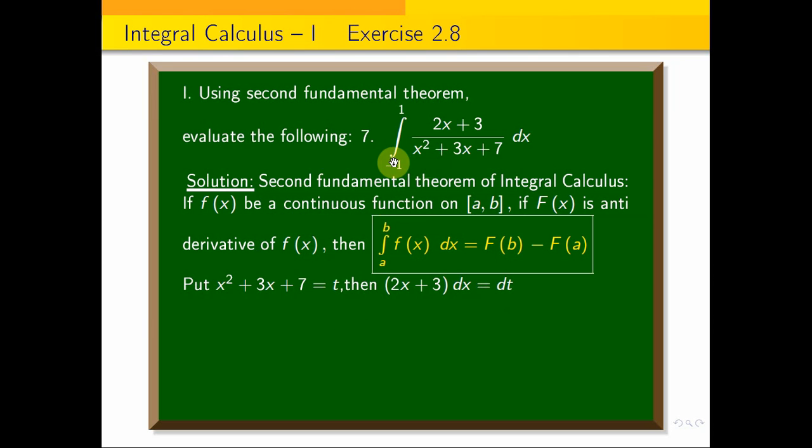So (2x + 3)dx = dt. When x equals the lower limit -1, substitute x = -1 into the equation: t = (-1)² + 3(-1) + 7. This equals 1 - 3 + 7. Simplifying, that's 5. So the lower limit becomes 5.